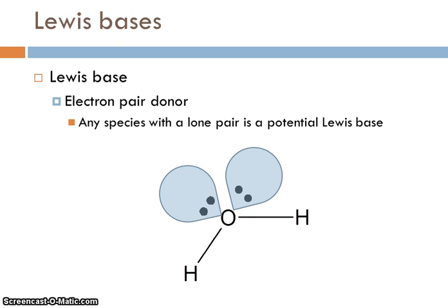Lewis bases are defined as species that can give away an electron pair. Electron pair donors. Any species with a lone pair is a potential Lewis base. For example, the water molecule here with its lone pairs, it can give them away or do something with them.